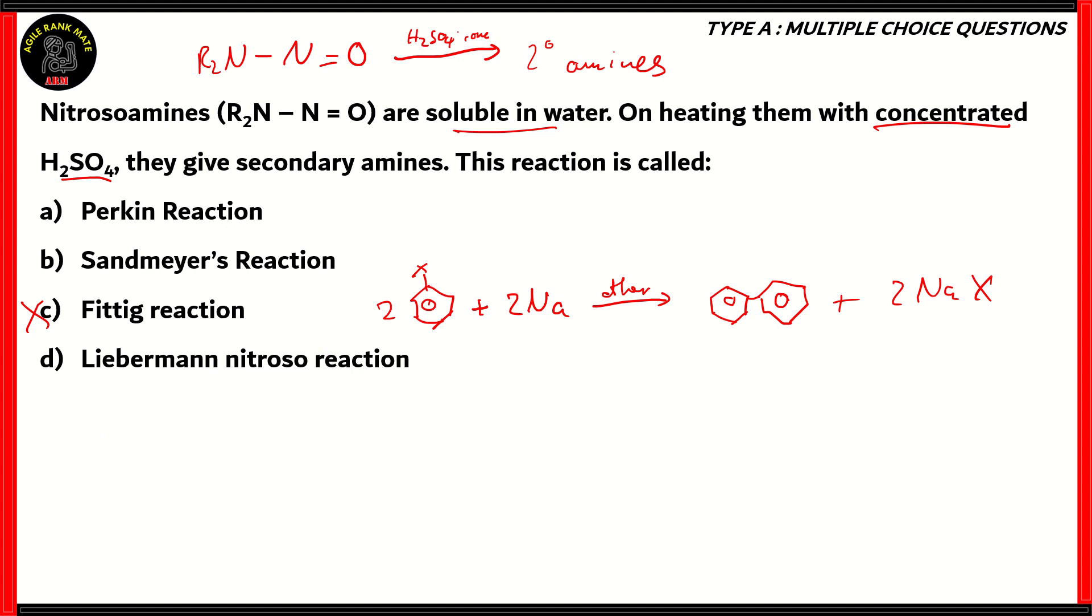What about option A, Perkin reaction? Well, Perkin reaction involves benzaldehyde and acetic anhydride in the presence of heat and sodium acetate, and this reaction forms cinnamic acid. Therefore again, no presence of nitroso amines, so option A is incorrect.